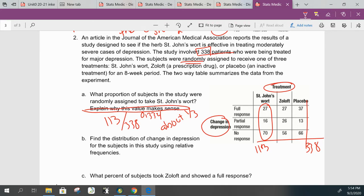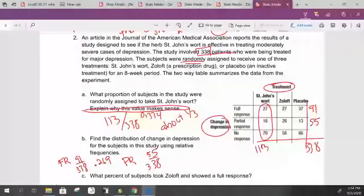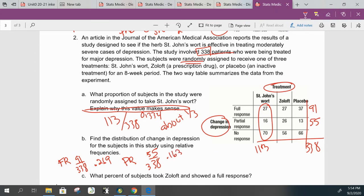Find the distribution of change in depression for the subjects in this study using relative frequencies. So we have full response, and I'm going to use FR for that. And if we total all of the full response across, we get 91, so that's 91 out of 338, which is about 0.269. And then we have partial response, and if over here we add all these up, we get 55, so that is 55 out of 338, which is about 0.163. And then we have no response, and that row totals to 192, which is approximately 0.568.